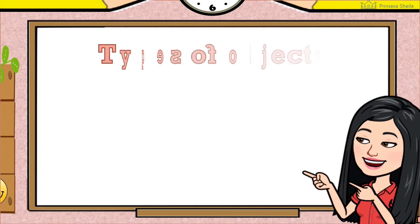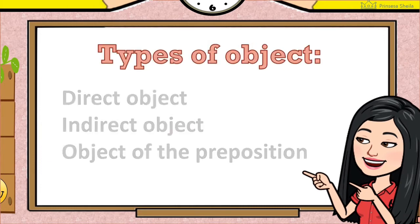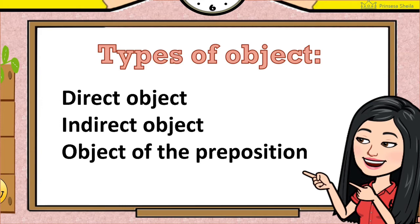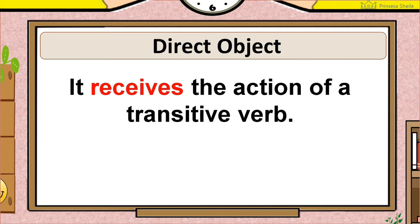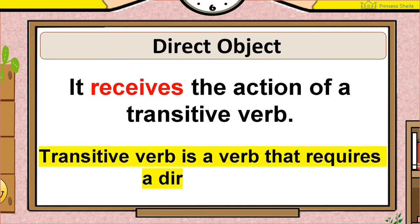Now, let's talk about the different types of object. The first one is direct object. It receives the action of a transitive verb. When we say transitive verb, it is a verb that requires a direct object.